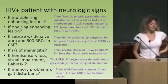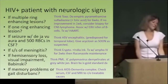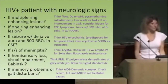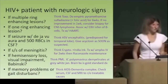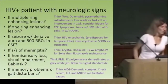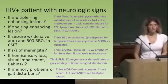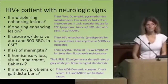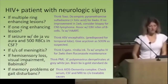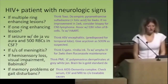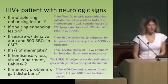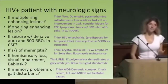If an HIV patient in their thirties has pretty bad dementia, not walking well, not remembering well with no other cause — that's AIDS dementia complex. Rule out all treatable causes, then give supportive care.